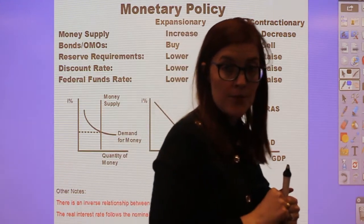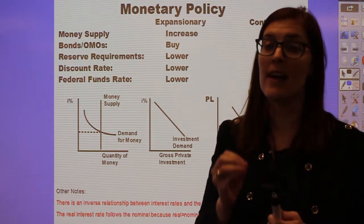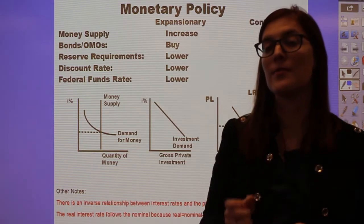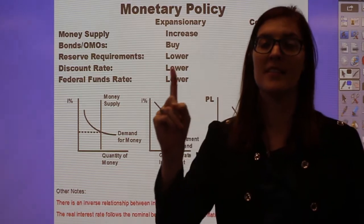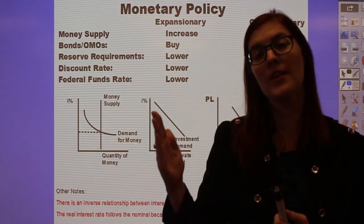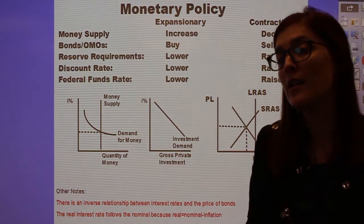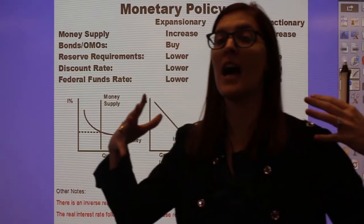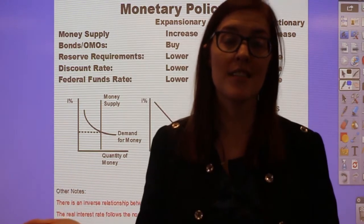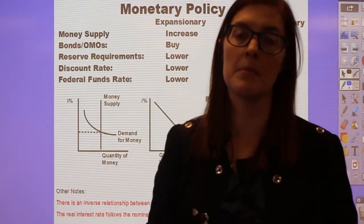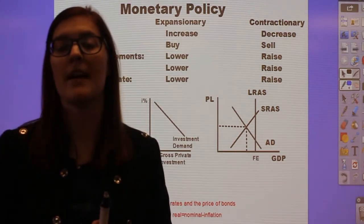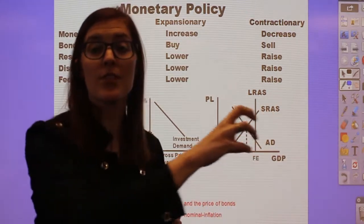The next tool is the discount rate, which has been used more frequently since the 2008 financial crisis. The discount rate is the interest rate on loans from the Federal Reserve to commercial banks. If the Fed wants to grow the money supply, it lowers the discount rate so banks don't have to pay back as much in interest, allowing them to loan more out. To fight inflation, the Fed raises the discount rate, taking money out of circulation as banks repay higher interest to the Fed.